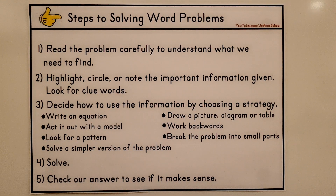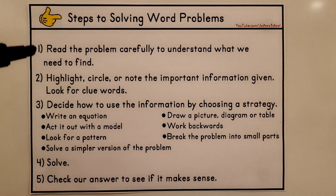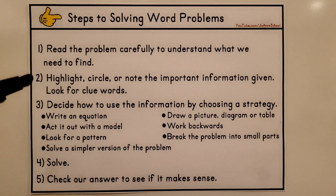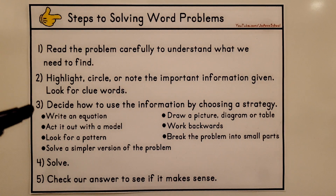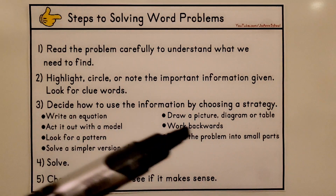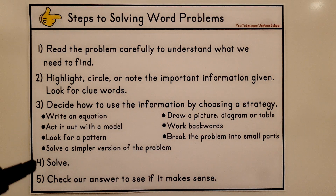We're going to do some word problems, and you need to remember the steps: first, read the problem carefully to understand what we need to find. Highlight, circle, or note the important information and look for clue words. Then decide how to use the information by choosing a strategy. Solve it and check to see if your answer makes sense — check it for reasonableness.